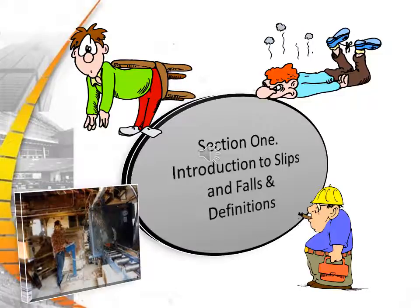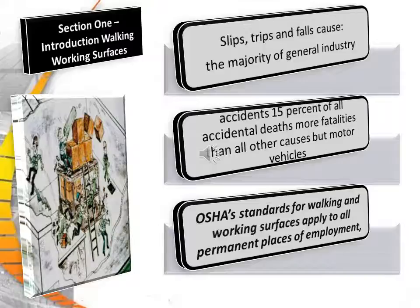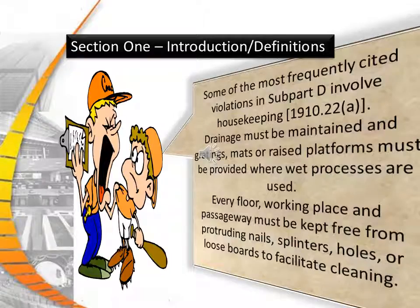Section 1: Introduction to Slips and Falls with Definitions. Slips, trips, and falls are the majority of injury causes in general industry. They account for the largest percent — 15% of all accidental deaths — and more fatalities than any other cause except motor vehicles. OSHA standards for walking working surfaces apply to permanent places of employment. Some of the most frequently cited violations in Subpart D involve housekeeping under 1910.22a.